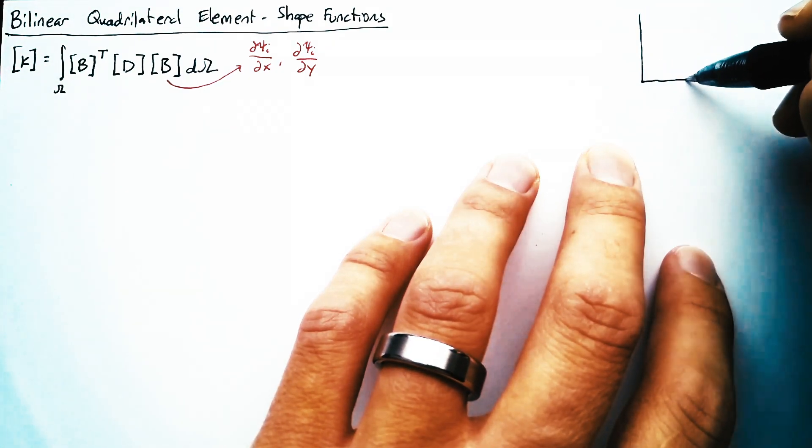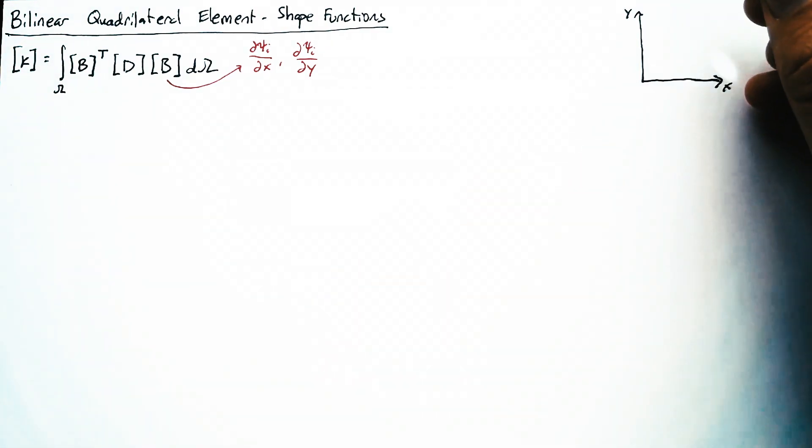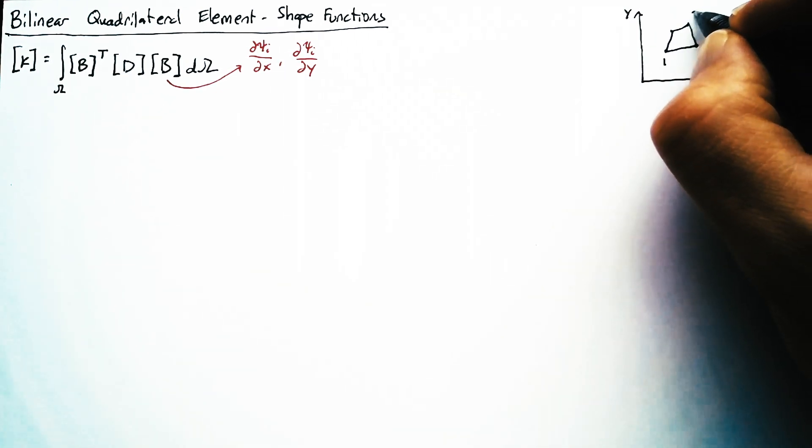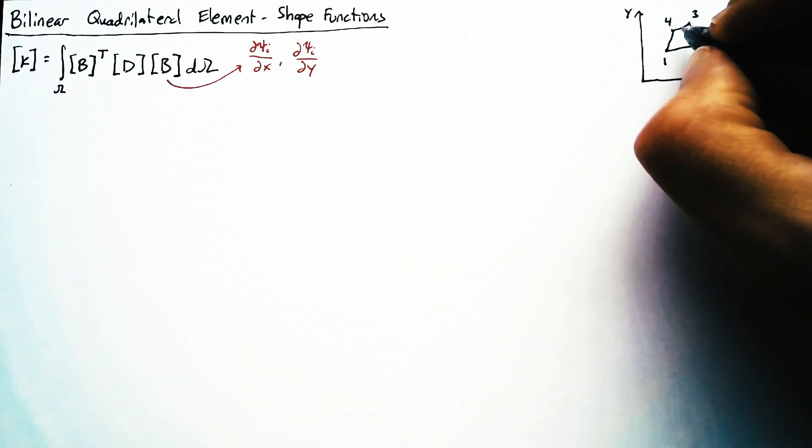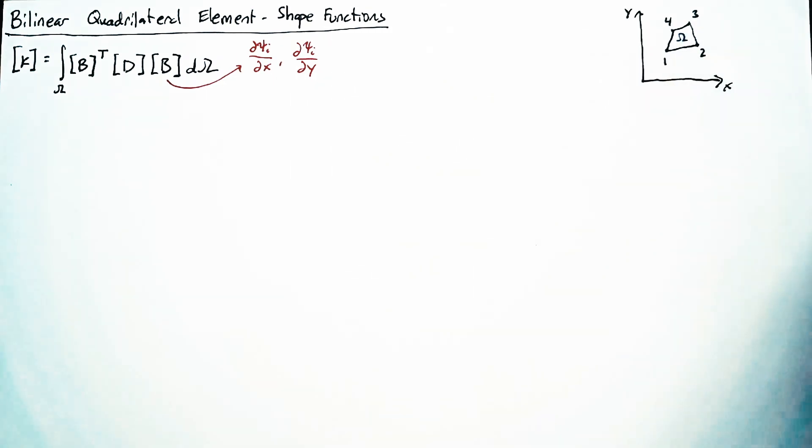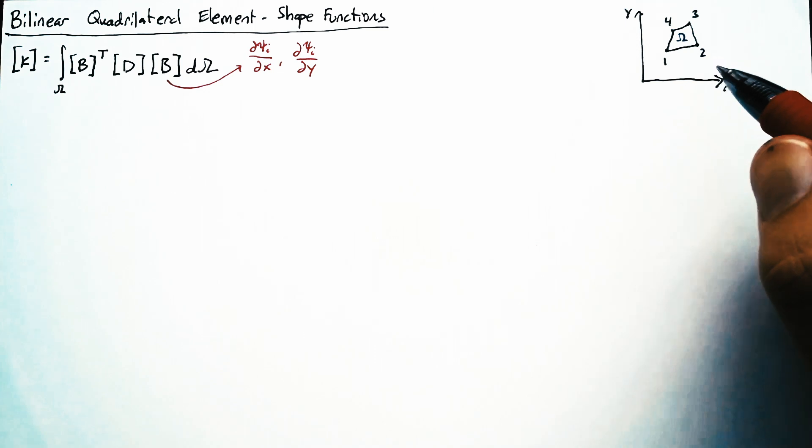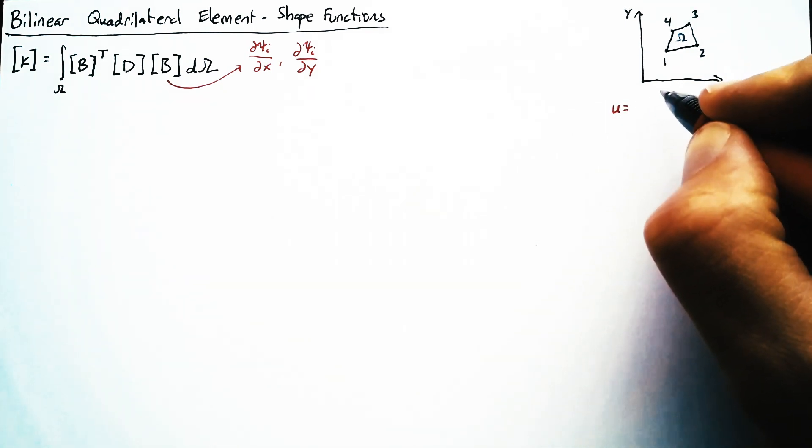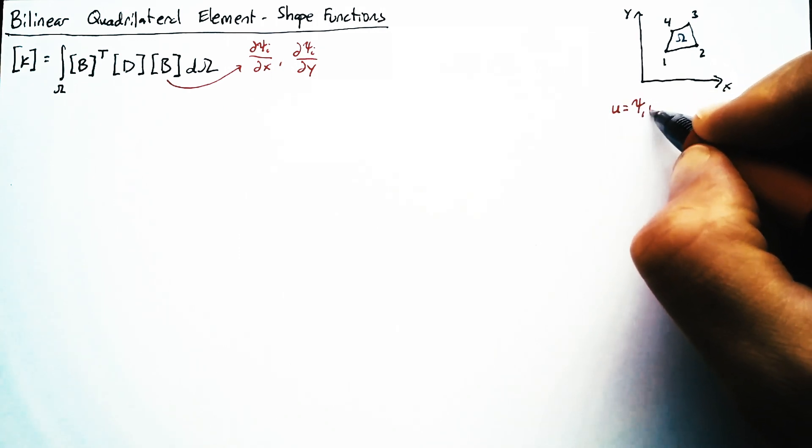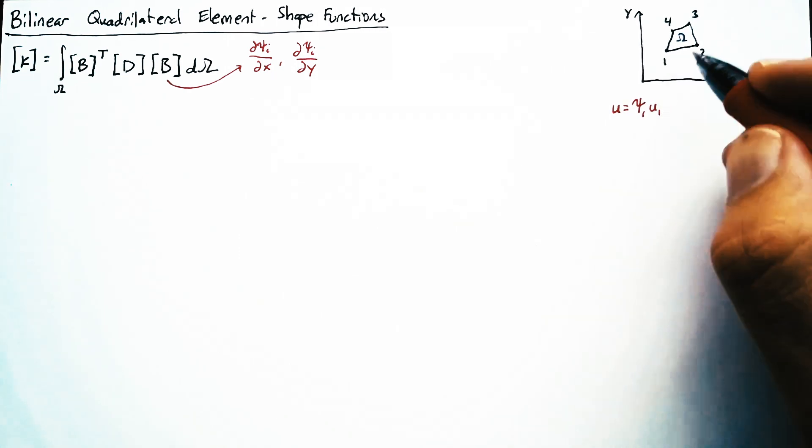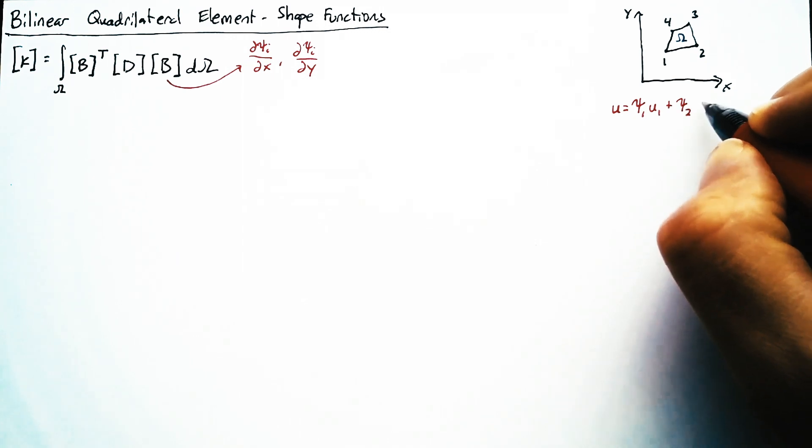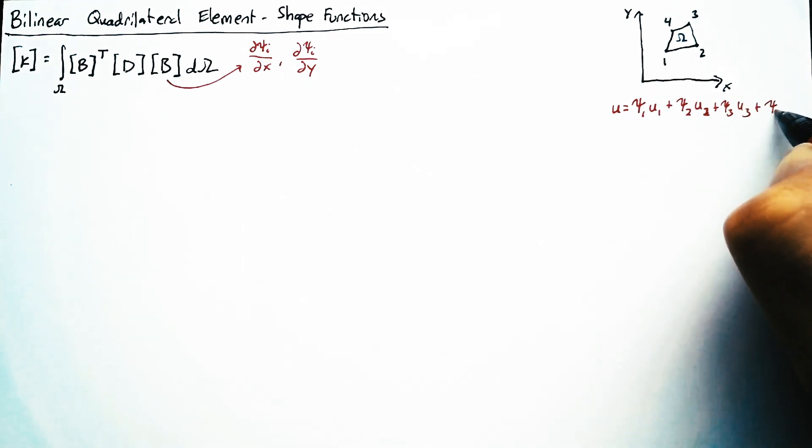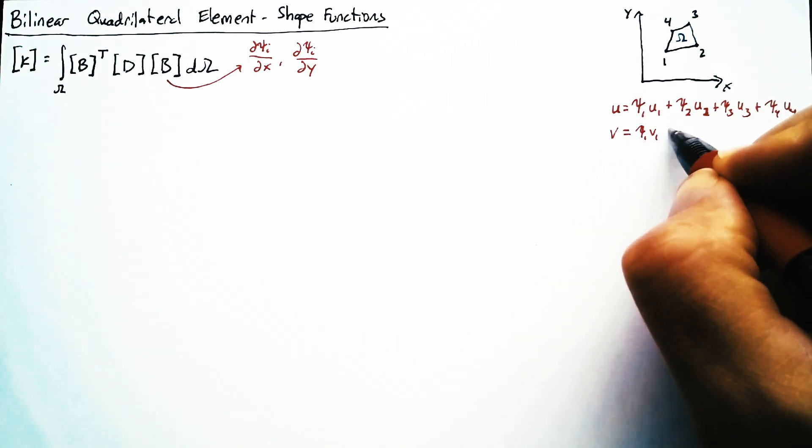Looking at our elements in the XY coordinate space, a quadrilateral element has four sides and four nodes, and we are calling this element omega. Now, as before, we're going to define our U and V based on the shape functions of each of those nodes. So we're going to have a shape function associated with node 1, which is going to be multiplied by U1, and the same is true of the other three nodes. And we'll do the exact same thing for V.